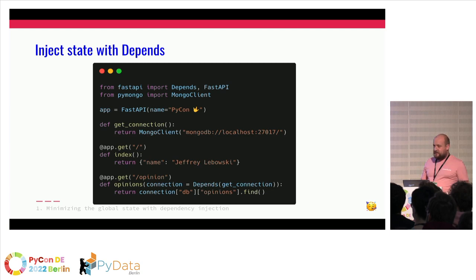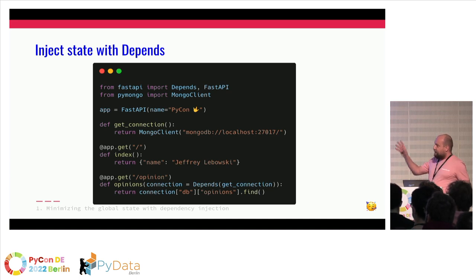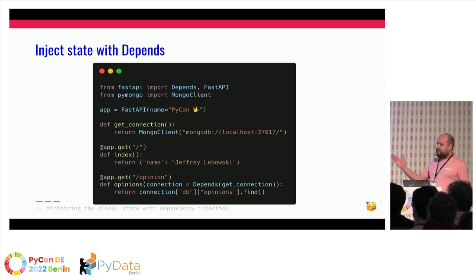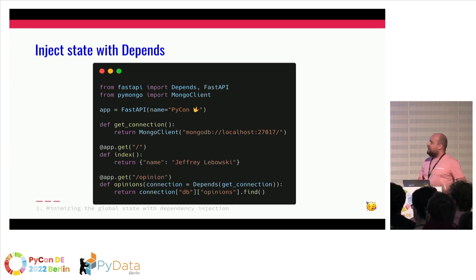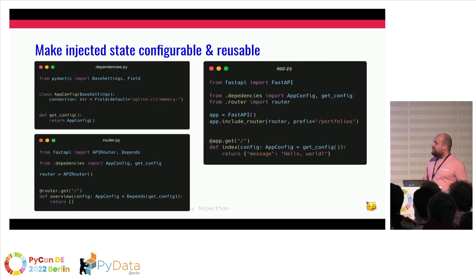Luckily, FastAPI has a nice mechanism called dependency injection. What it basically does is inject a state or a previously executed function into your route. In this case, we are injecting the MongoDB connection. It's not really Pythonic because you're executing a function as a default, but it's a nice mechanism and easy to use. If you run MyPy on this, it will blow up. This is all documented in the FastAPI documentation, and I strongly advise reading the dependency mechanism before doing anything else.